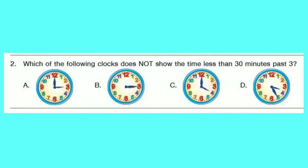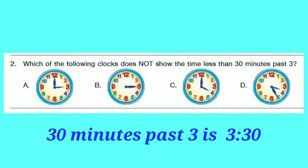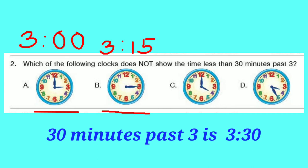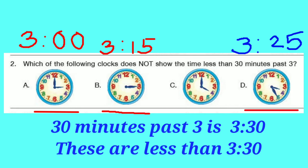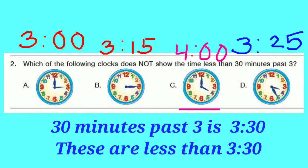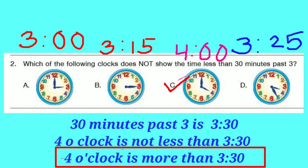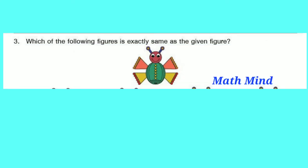Question number 2: Which of the following clocks does not show the time less than 30 minutes past 3? 30 minutes past 3 is 3:30. Option A is 3 o'clock. Option B is 3 hours 15 minutes. Option D is 3 hours 25 minutes — all less than 3:30. Option C is 4 o'clock, which is not less than 3:30. So option C is correct.